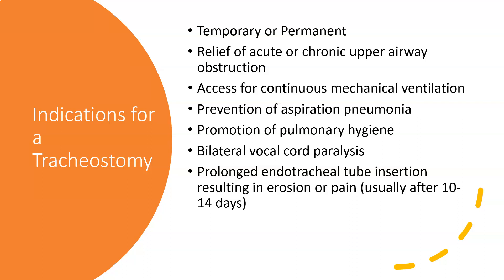Not all patients with a tracheostomy will be on continuous mechanical ventilation — some will be on a T-piece, some may just have it open to air. One reason they place these temporarily is prevention of aspiration pneumonia, and it also promotes better pulmonary hygiene. A prolonged endotracheal tube insertion can cause erosion and pain, so someone on a mechanical ventilator for greater than about 10 days will typically have a tracheostomy placed.